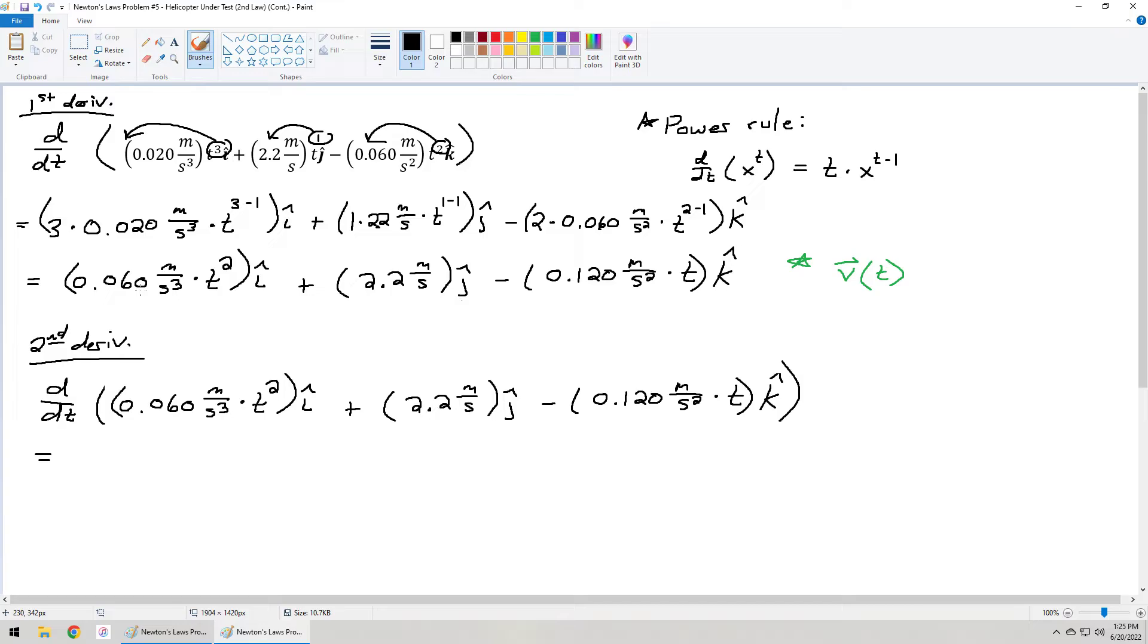But remember the approach, excuse me, is the exact same, nothing is different. So if I do exactly the same thing, I'll end up with 0.060 multiplied by 2, so 0.120 meter per second cubed, multiplied by t, instead of t squared, that chunk all in the i-hat direction.